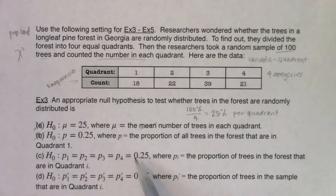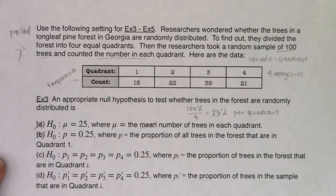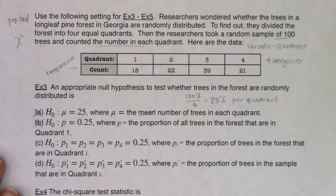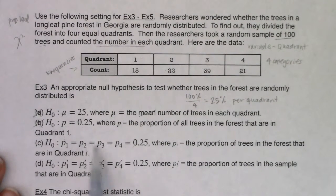And then we can start to see in parts c and d that I've got the equality that I'm looking for. I can see all of the proportions are equal to 25%, and they're finally talking about all four quadrants. Quadrant i. So that would mean p sub one was for quadrant one, p sub two was for quadrant two, p sub three, quadrant three, p sub four, quadrant four. So then I got to just pick between these symbols. Do I want p's in my null hypothesis, or do I want p primes?